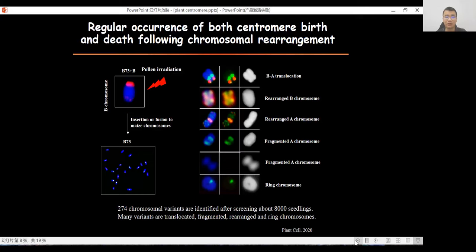To systematically examine the process of centromere inactivation and de novo formation in maize, tassel from maize inbred line B73 plus B chromosome was used for irradiation, and the pollen was applied to the silk of embryo line B73. 274 chromosomal variants were identified after screening about 80,000 seedlings. These variants included translocated, fragmented, rearranged, and ring chromosomes.